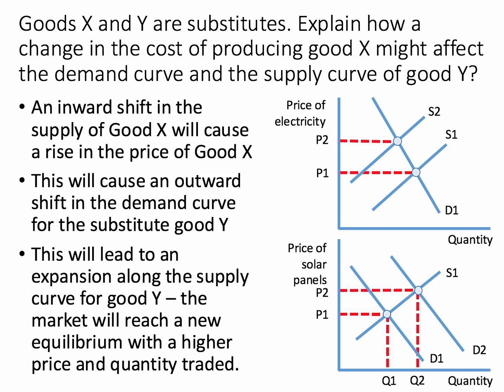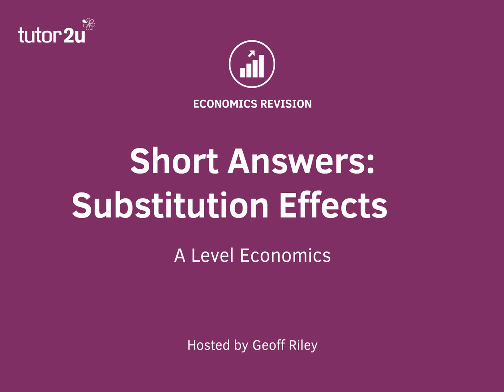An inward shift of the supply of good X, electricity, causes a rise in the price of X. This will then cause an outward shift in the demand curve for the substitute good Y, which we're calling solar panels. That outward shift in demand for solar panels causes an expansion along the supply curve for good Y, and the market will reach a new equilibrium with a higher price and an expansion of quantity traded. That's our short answer on substitution effects.